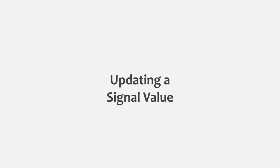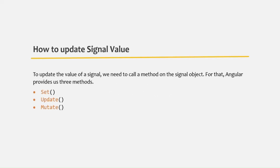In the last lecture, we learned how we can create and use a signal. Now in this lecture, let's try to understand how we can update a signal value. In Angular, we have three methods to update a signal value: the set method, the update method, and the mutate method. In this lecture, we will learn how to use the set method and update method, and in the next lecture, we will talk about the mutate method.